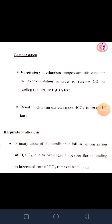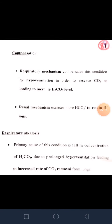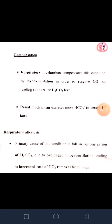One slide was missed: compensation of metabolic alkalosis by the lungs is by hypoventilation, which leads to retention of carbon dioxide in the body, increasing carbonic acid level. The kidney is involved to excrete more bicarbonate ion in metabolic alkalosis because there is more than sufficient bicarbonate present. In the next lecture we will discuss arterial blood gases and anion gap. Thank you.